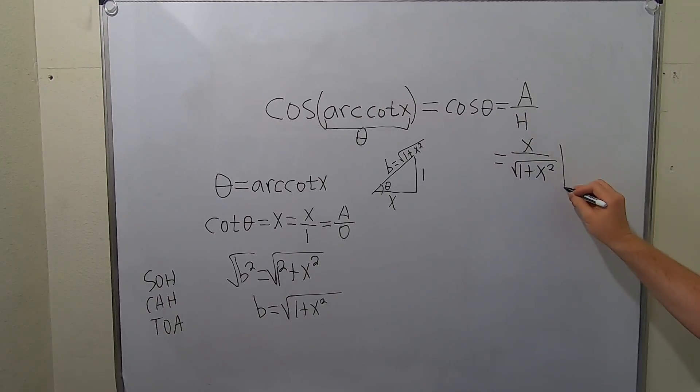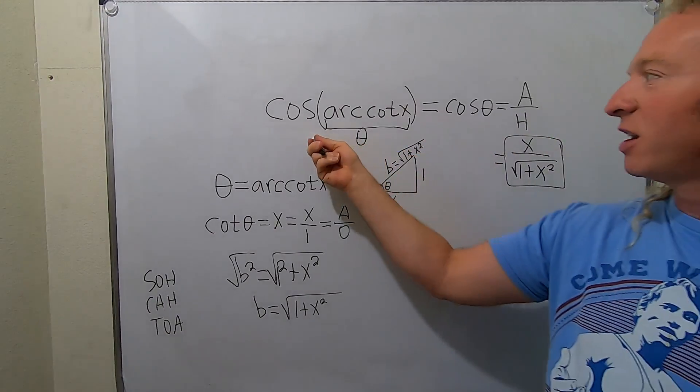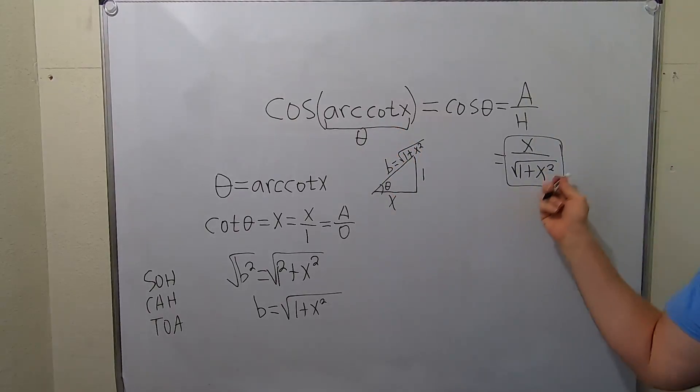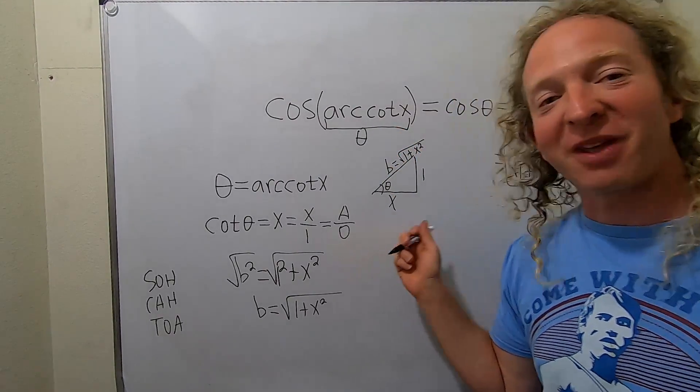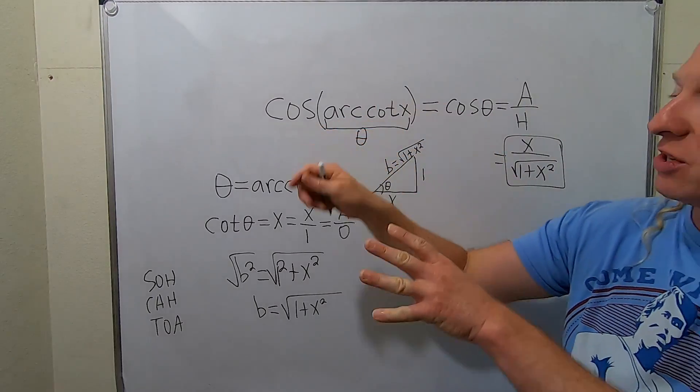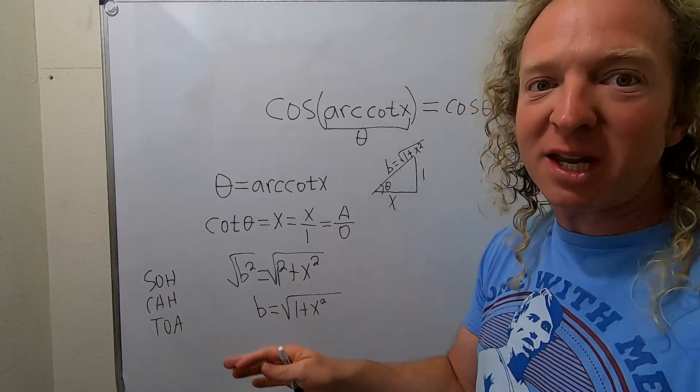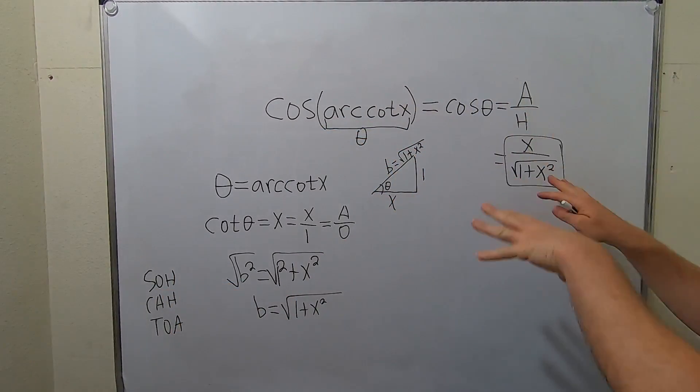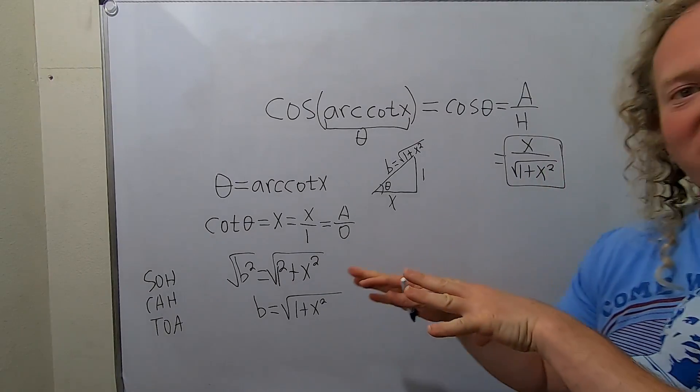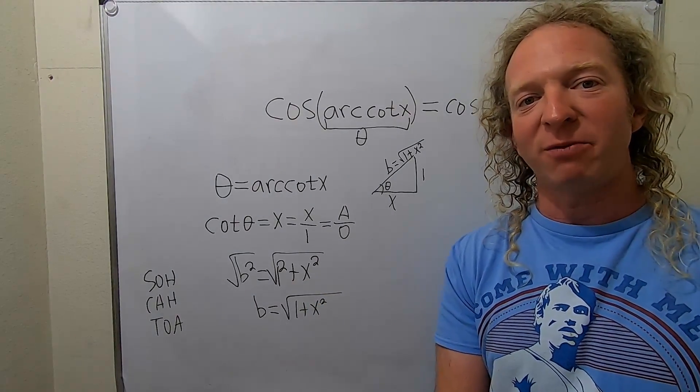Beautiful stuff. So if you actually take the cosine of the arccotangent of x you actually get this algebraic expression. It's pretty ridiculous. Pretty cool if you think about it. We took trig functions and we completely eliminated them using triangles and came up with an algebraic expression. I hope this video has been helpful. Take care.